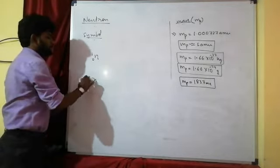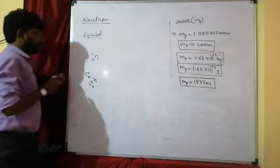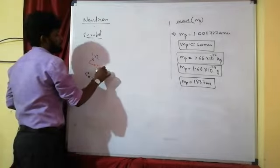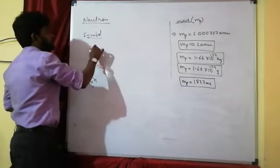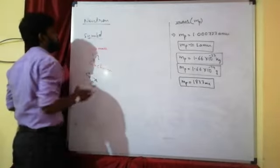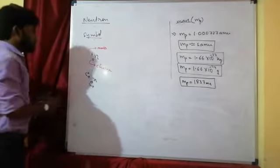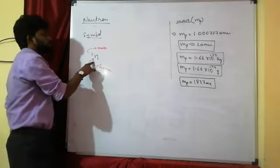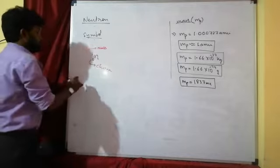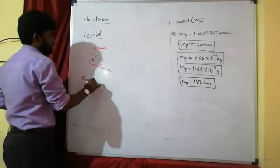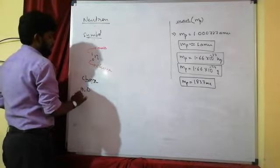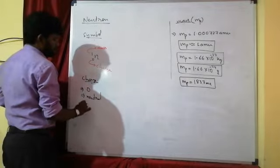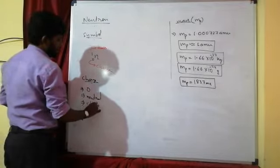In the symbol n₀¹, the charge is zero and mass is one in amu. So the neutron has zero charge — it is a chargeless, neutral particle.